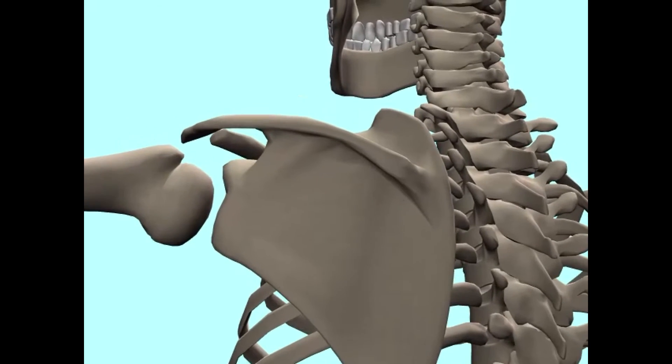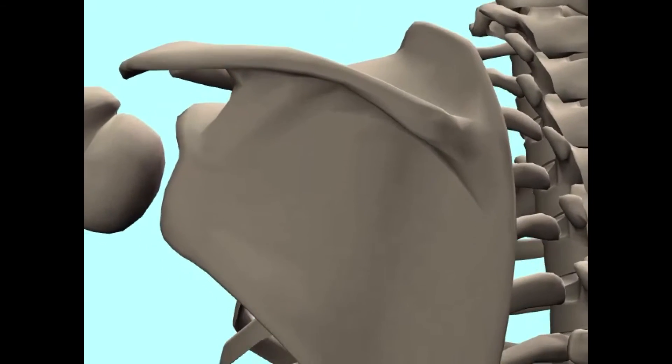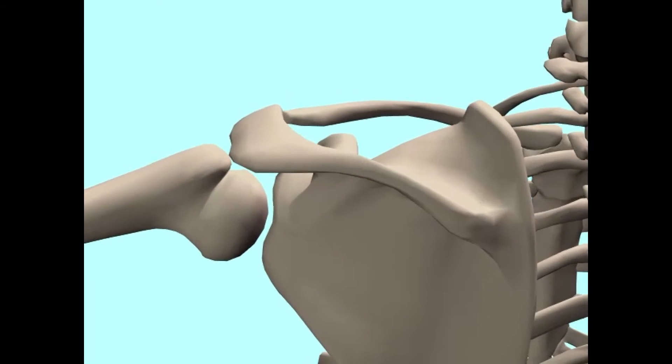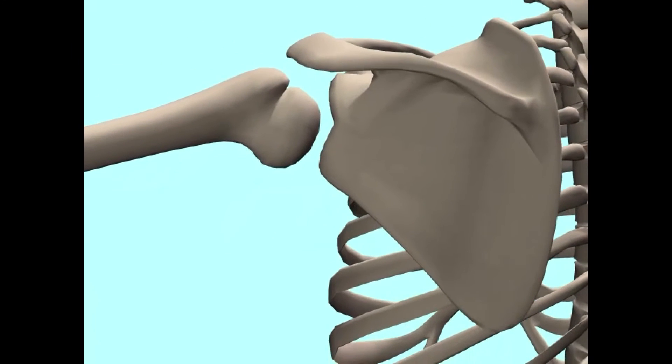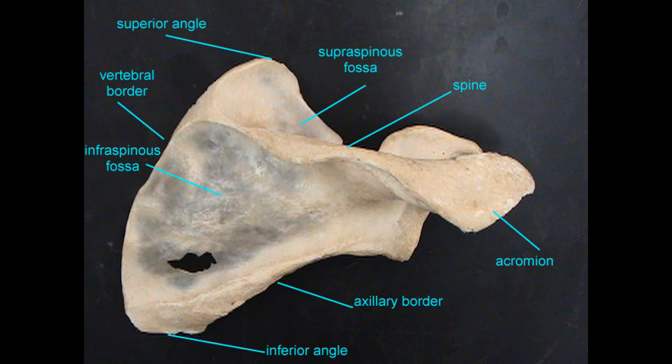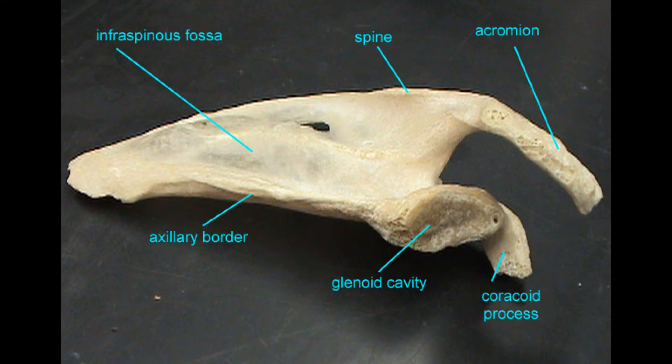On the posterior of the scapula is the prominent spine. The depression above the spine is known as the supraspinous fossa. The depression inferior to the spine is known as the infraspinous fossa.